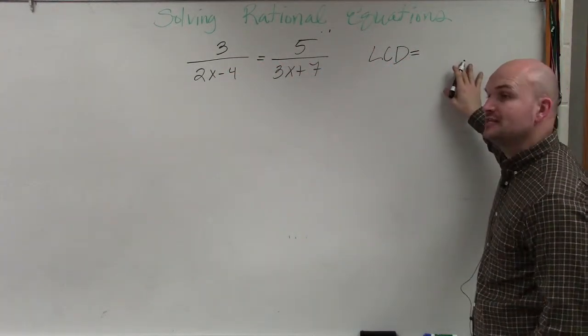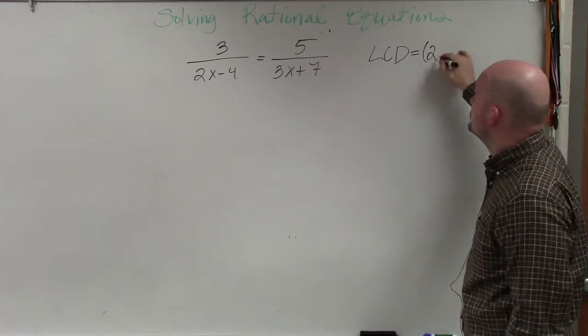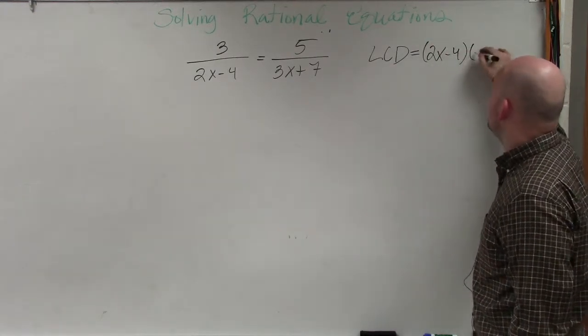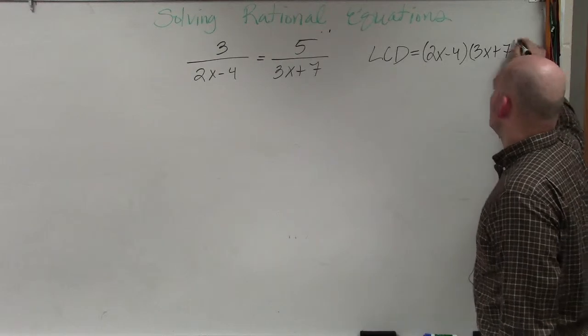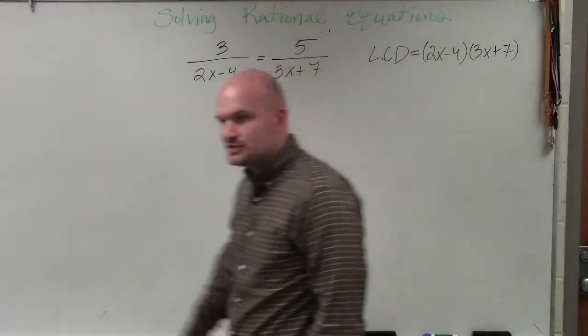So in this case, the LCD is simply going to be the product, 2x minus 4 times 3x plus 7. It's just going to be the product of the two denominators.